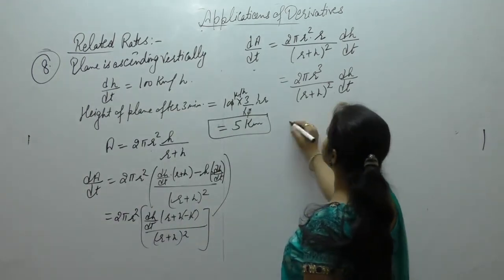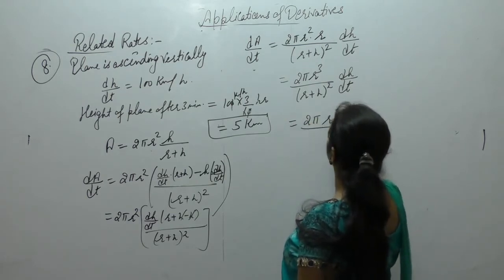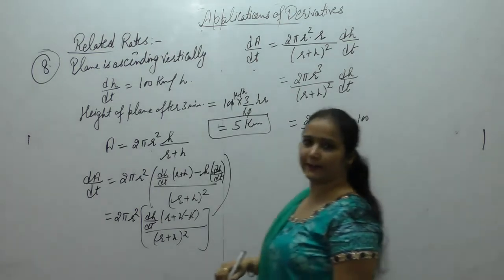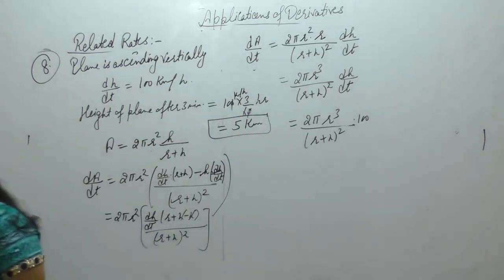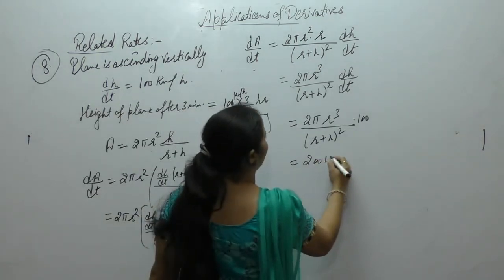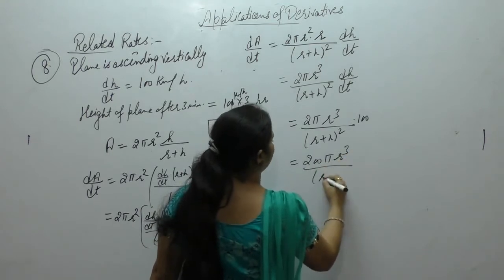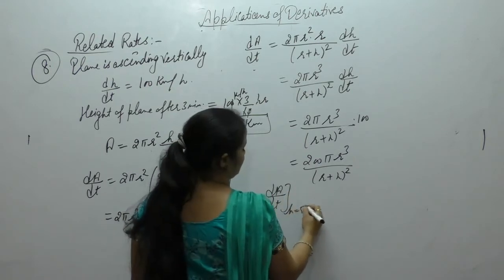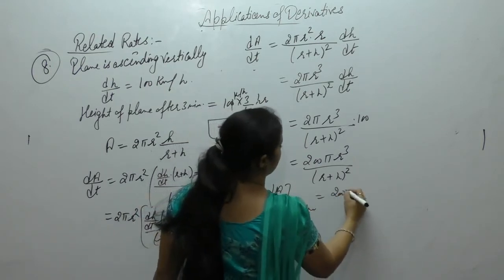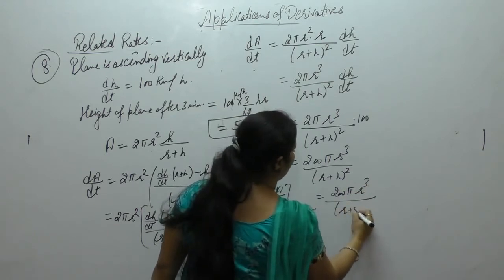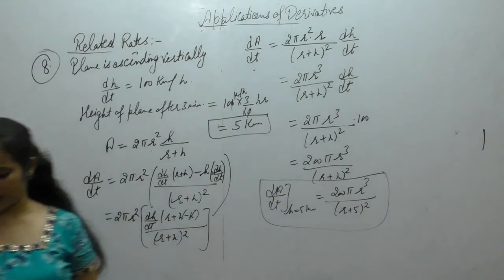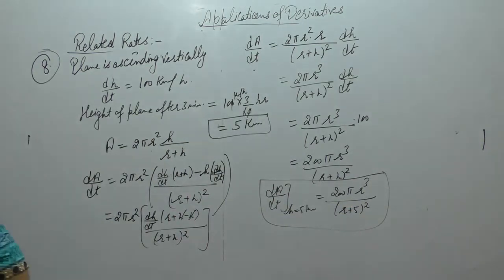When t is 3, dh by dt is 100 km per hour. So dA upon dt equals 200 pi r cube upon r plus h whole square. When h equals 5 km, dA upon dt equals 200 pi r cube upon r plus 5 whole square.